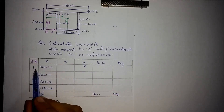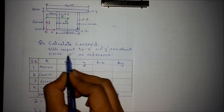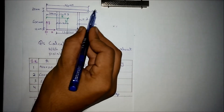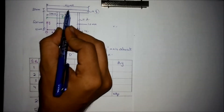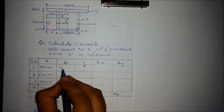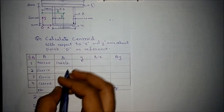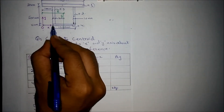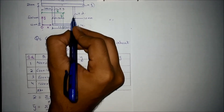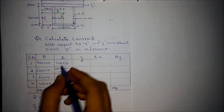Now for working out the distance x for each individual shape, we consider the origin point O as reference, as we are measuring with respect to the x and y axes about point O. For shape number one, we find the distance from this point to the centroid of the individual shape, which will be 1420 divided by 2. The centroid would be somewhere here, so measuring along the x axis: 100 mm plus 1220 minus this thickness.